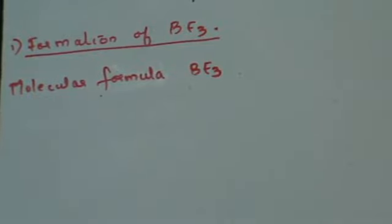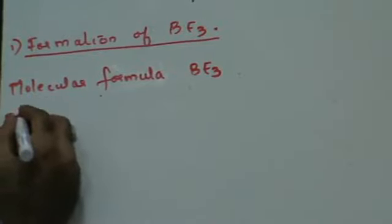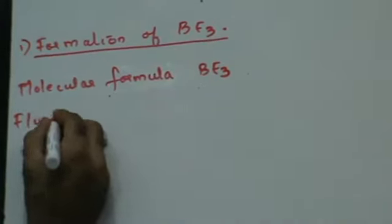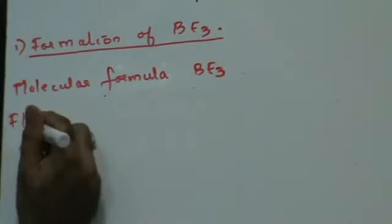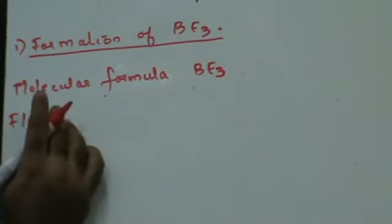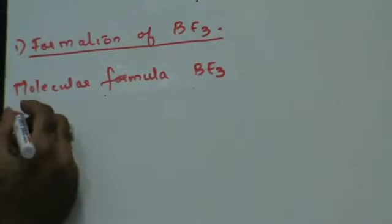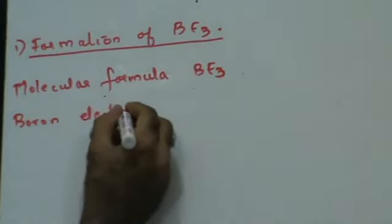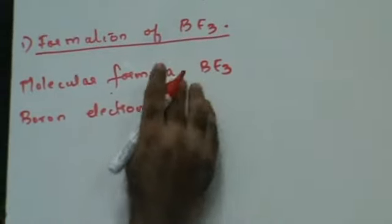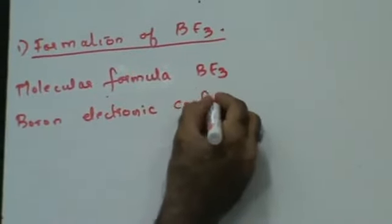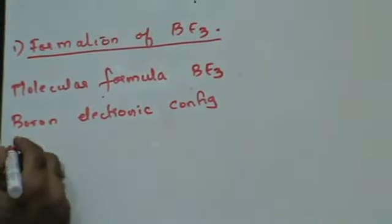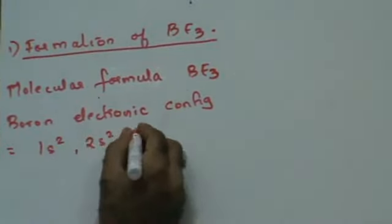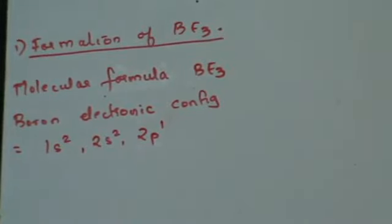Then, electronic configuration of Fluorine and Boron. Boron has atomic number 5, so its electronic configuration is 1s2, 2s2, 2p1. That's the electronic configuration of Boron.